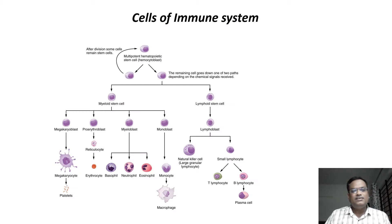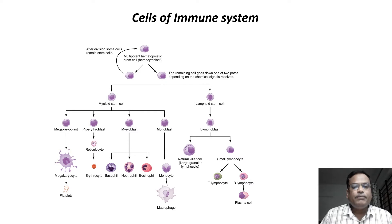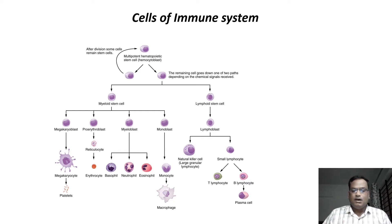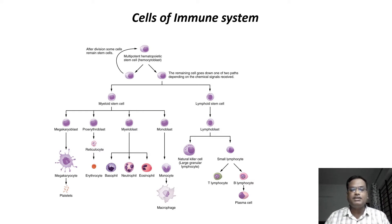Let us see the cells associated with the immune system. Bone marrow is the site where cells are produced. In the bone marrow we find the multipotent hematopoietic stem cell, which is the source cell for all kinds of immune system cells. This produces two lineages: the myeloid stem cell and the lymphoid stem cell.